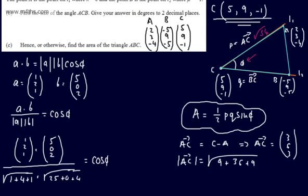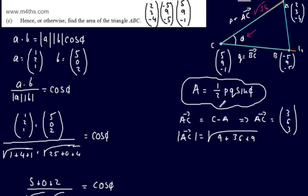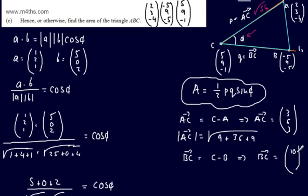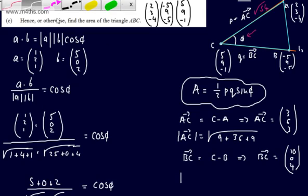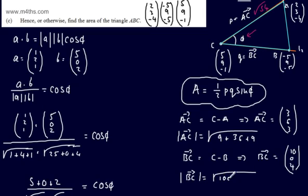Now finding vector BC = C - B = (5-(-5), 9-9, -1-(-5)) = (10, 0, 4). The modulus |BC| = √(100 + 0 + 16) = √116.